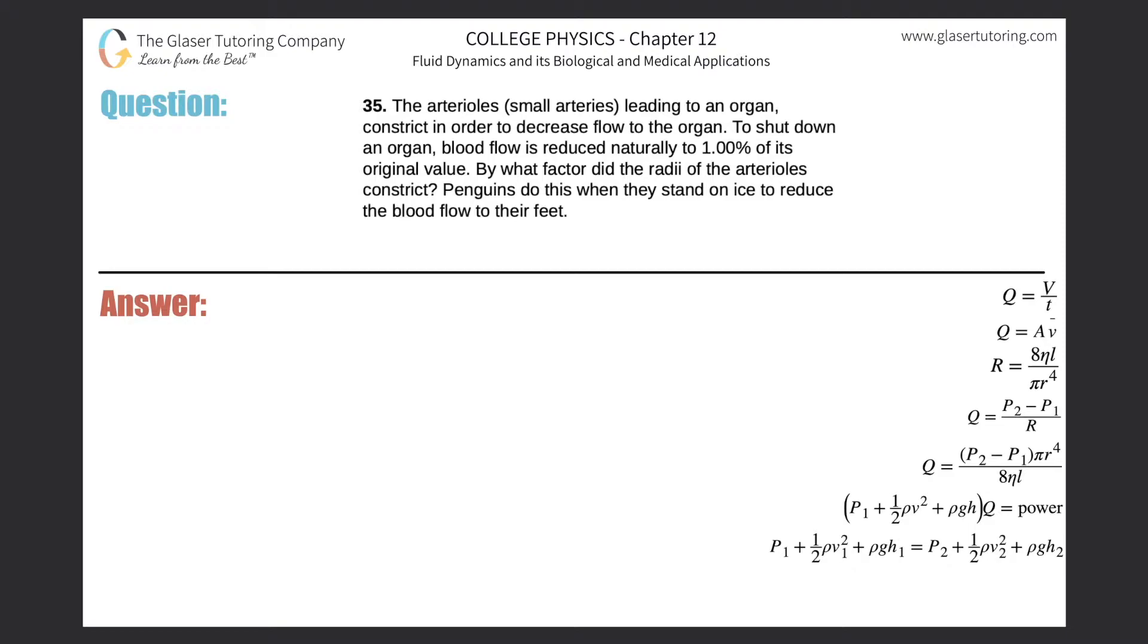Number 35: The arterioles, small arteries leading to an organ, constrict in order to decrease flow to the organ. To shut down an organ, blood flow is reduced naturally to one percent of its original value. By what factor did the radii of the arterioles constrict? Penguins do this when they stand on ice to reduce the blood flow to their feet.